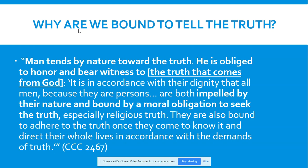Rewind to chapter one: man, being made in the image and likeness of God, was made to know truth, to choose it, and to experience love. That's what it means to be made in the image of God — to know, to choose, to love. What this commandment is saying is: because we were made for the truth, we are morally obligated to tell each other the truth. That is the principle behind this commandment.